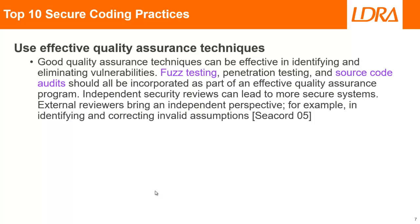We should also put in place effective quality assurance techniques — things like penetration testing, source code audits, and also fuzz testing. Fuzz testing is basically where we take a particular function and try invoking it with a range of different inputs, many of which may be invalid, checking that the code is robust and doesn't crash.